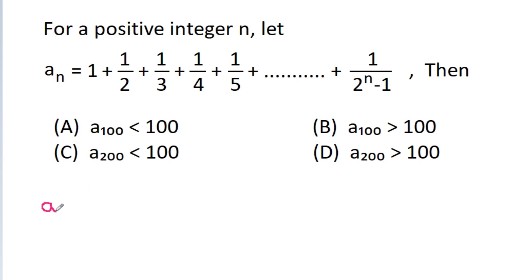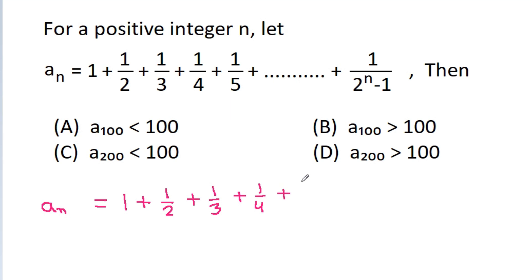So a_n is equal to 1 plus 1/2 plus 1/3 plus 1/4 plus 1/5 plus up to 1 by 2^n minus 1.